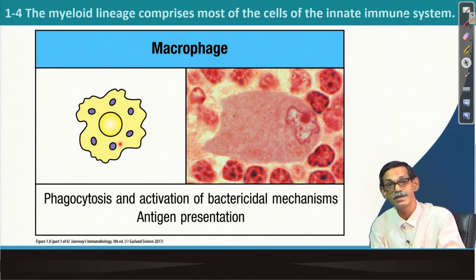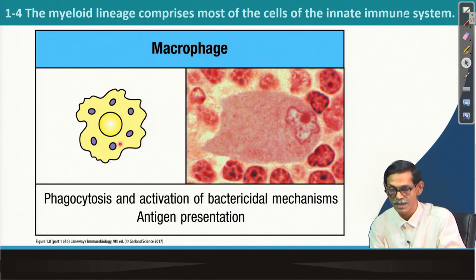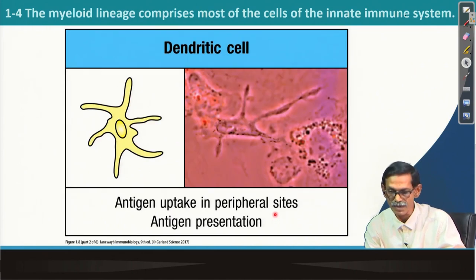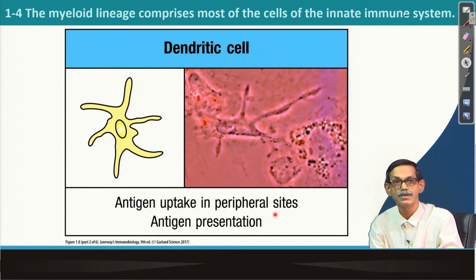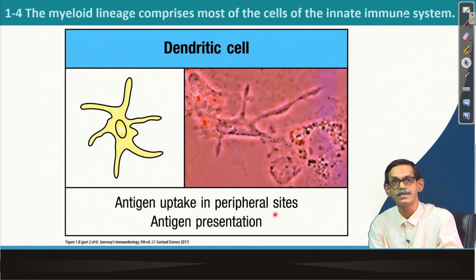Macrophage also does the cleaning up of debris, as we already discussed in the last class. There is another cell which is also an antigen presenting cell, known as dendritic cells. It uptakes the antigen from peripheral sites, normally by macropinocytosis, and by that it presents the antigen to B cells and T cells in the lymph node.